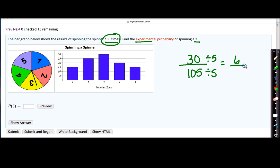30 divided by 5 is 6, and 105 divided by 5, that goes in about 21 times.